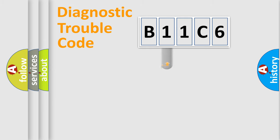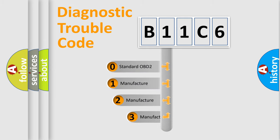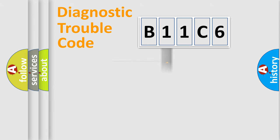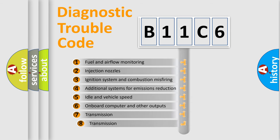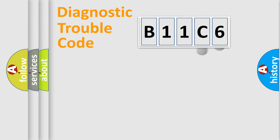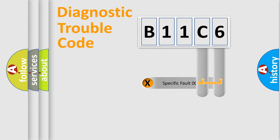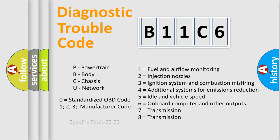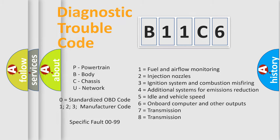This distribution is defined in the first character of the code. If the second character is expressed as zero, it is a standardized error. In the case of numbers 1, 2, or 3, it is a more specific car-specific error. The third character specifies a subset of errors, and this distribution is valid only for the standardized DTC code. Only the last two characters define the specific fault of the group — but only when the second character is zero.